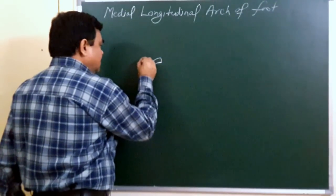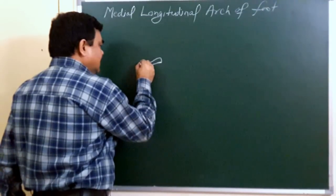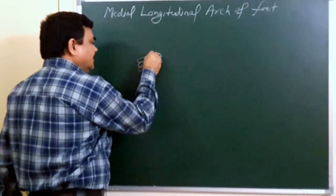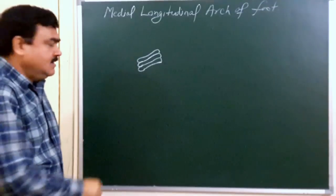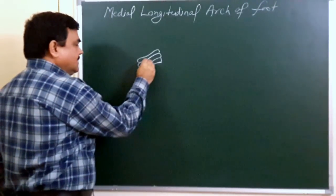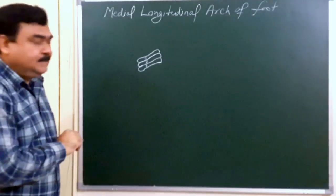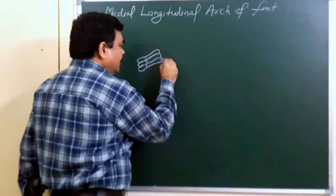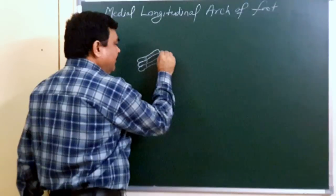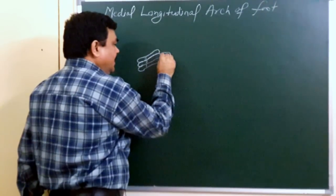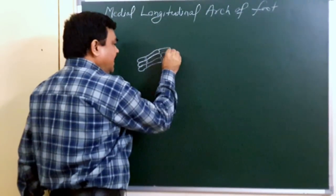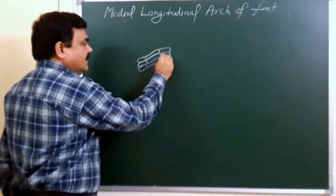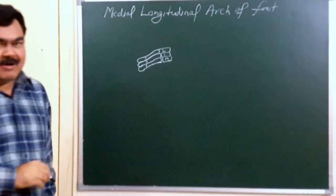This is the first metatarsal, here is the second metatarsal, and this is the third metatarsal. Here is the medial cuneiform. This is the intermediate cuneiform and this is the lateral cuneiform bone.